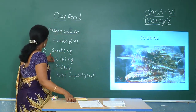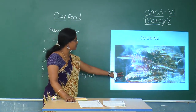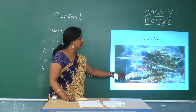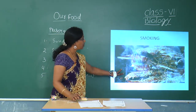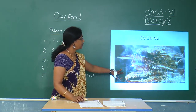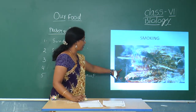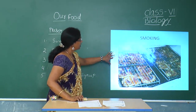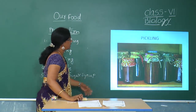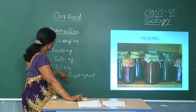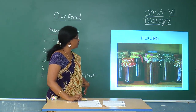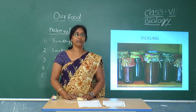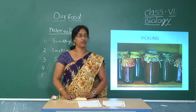The next method is smoking. In smoking, the food is exposed to smoke. Because of the heat present in the smoke, moisture evaporates and the food is preserved for a long time. Then the next method is pickling: most vegetables are preserved by pickling — lemon, mango, and even fish and meat are also preserved by means of pickling.